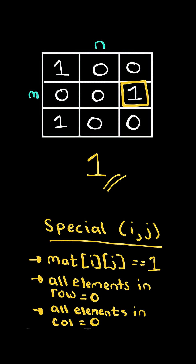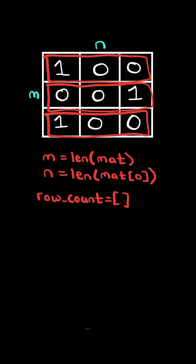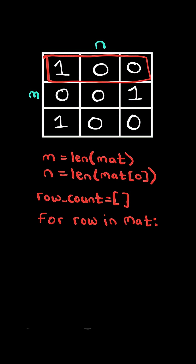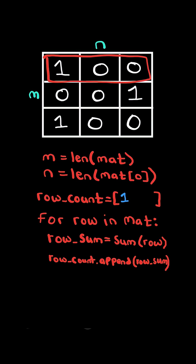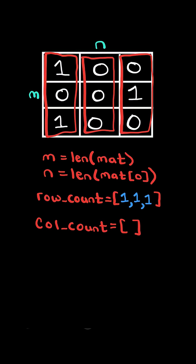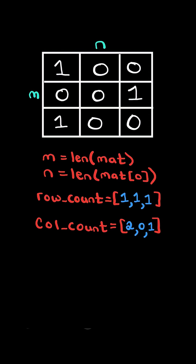Return the number of special positions. We will solve this in O(m × n) time. We will keep track of the sum of every row. For each row in the matrix, we append the row sum. We then do a similar process for the column.